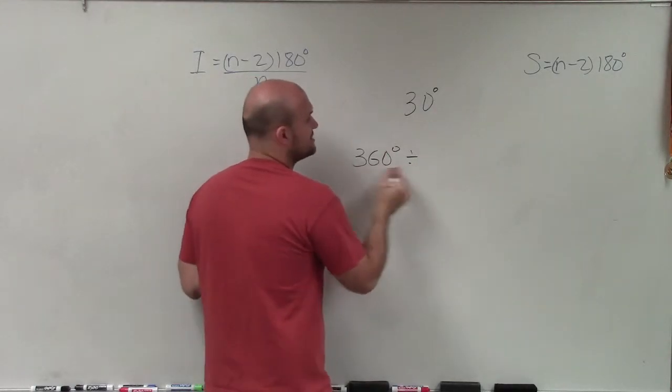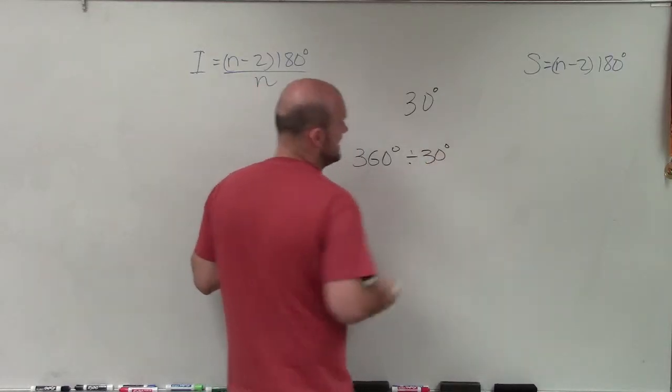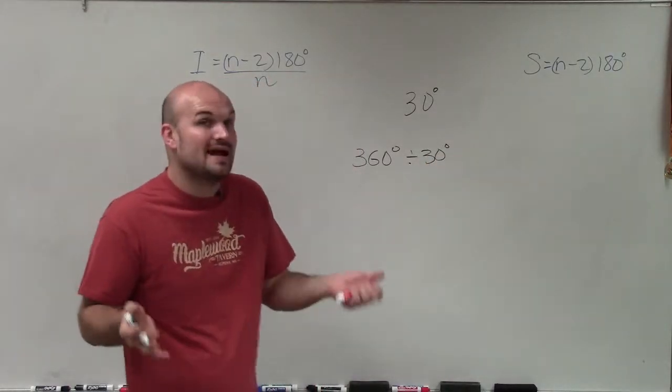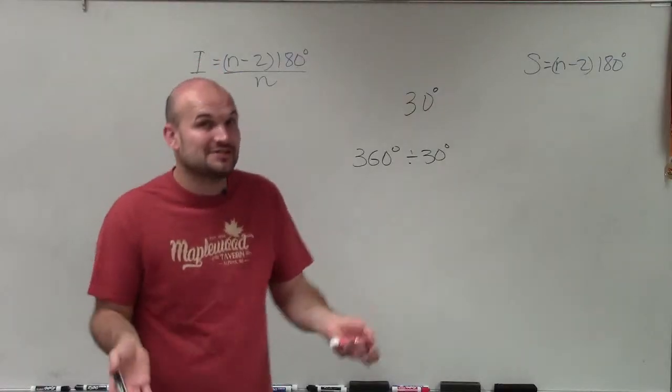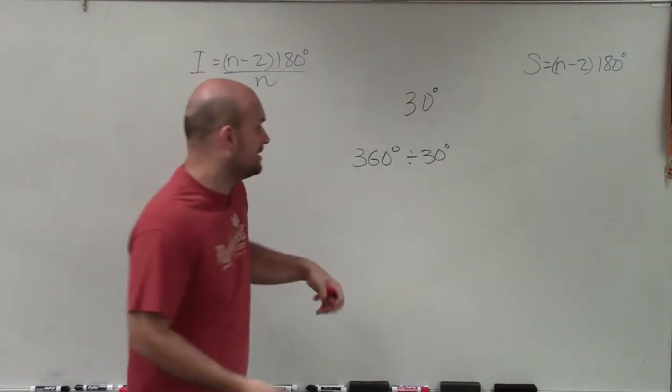if I just simply divide 360 degrees divided by 30 degrees, that will tell me how many 30-degree angles I have, which would be how many exterior angles I have, which would be the number of sides of my polygon.